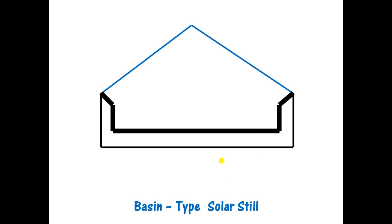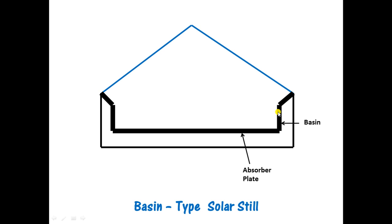The arrangement we are studying here is called the basin-type solar still. It is called basin-type because this black-colored structure is called the basin. It is also called the absorber plate, which is painted black so that it absorbs a greater amount of solar heat.